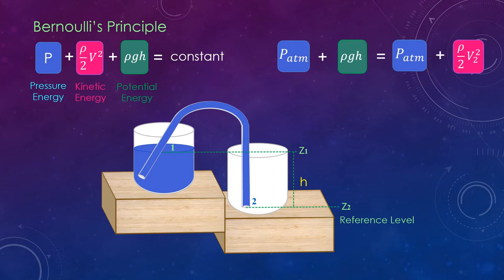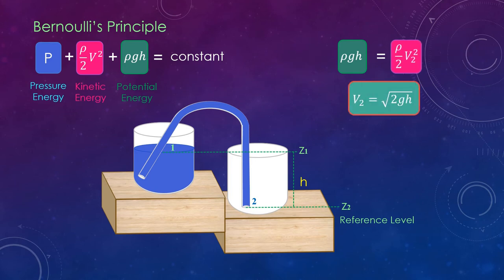Now the pressure term on both sides gets cancelled, and on further rearranging we get the final expression of the fluid velocity at the outlet of the pipe. This will give the ideal velocity of the fluid, but the real velocity will be less than that due to the friction of the fluid with the pipe surface during the flow.